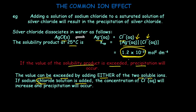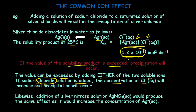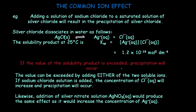Here the common ion is the chloride ion. If sodium chloride solution is added, the concentration of Cl⁻ increases, resulting in precipitation. Likewise, addition of silver nitrate solution to the same silver chloride solution would produce the same effect — the concentration of silver ions increases, again exceeding the Ksp of silver chloride, which results in precipitation. So, adding any one common ion to a saturated solution of a sparingly soluble ionic compound will result in the precipitation of that salt.